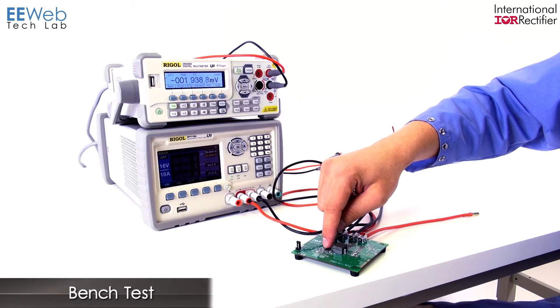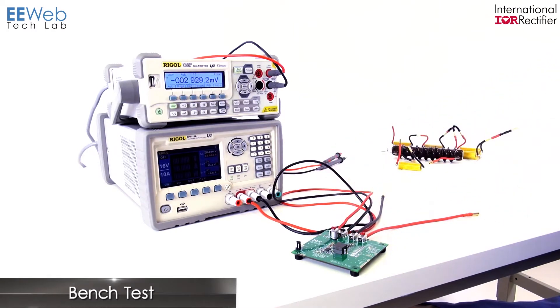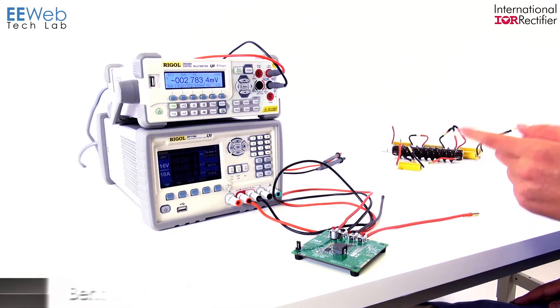Here you have the actual IR3846. It can take up to 21 volts input. This board is configured for 12 volts, which is what we have on our programmable supply. Again, it can do 35 amps output, which I think is very impressive for such a small package.